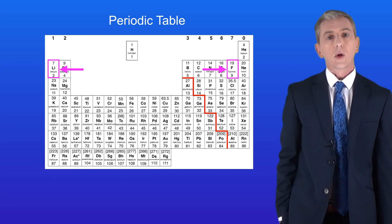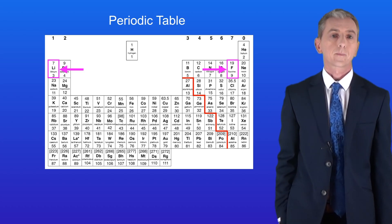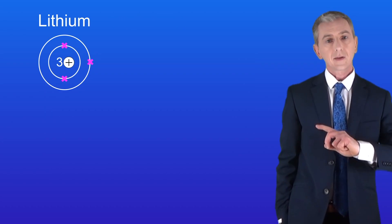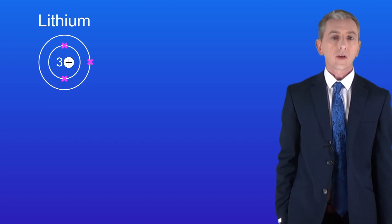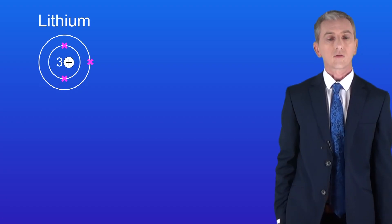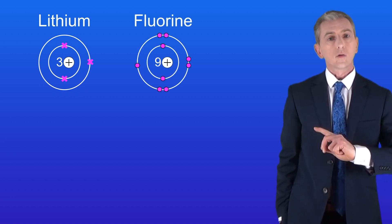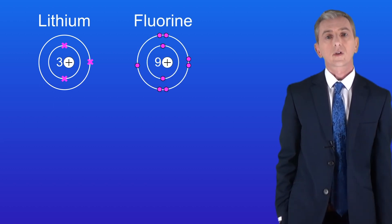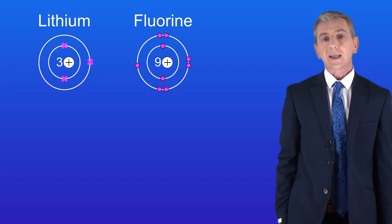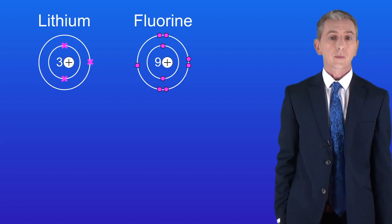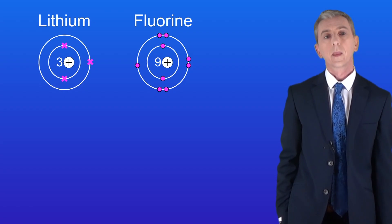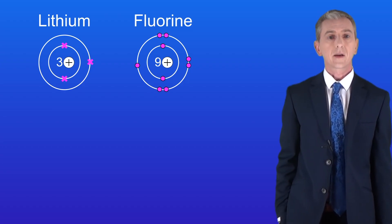Let's start by looking at ionic bonding between the metal lithium and the non-metal fluorine. Lithium has three positive protons and three negative electrons. Because there are the same numbers of protons and electrons the charges cancel, so an atom of lithium has no overall charge. Fluorine has nine positive protons and nine negative electrons — again the charges cancel, so an atom of fluorine has no overall charge. I'm using crosses to show the electrons on the lithium atom and dots to show the electrons on the fluorine atom.